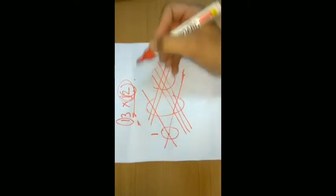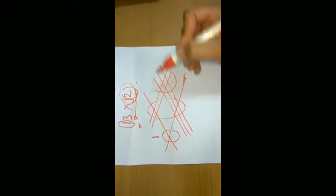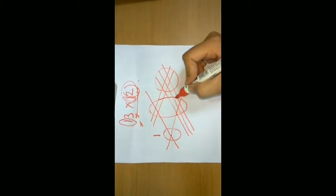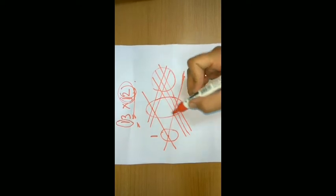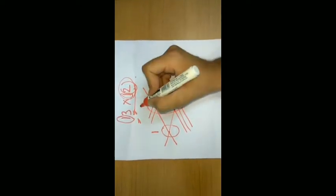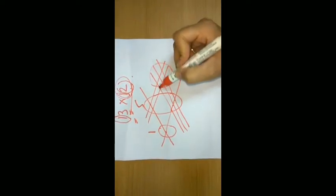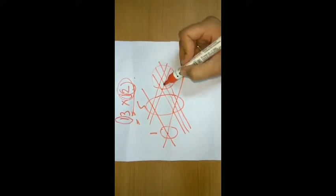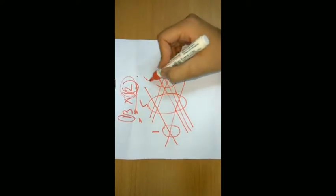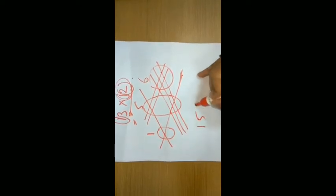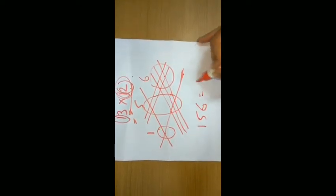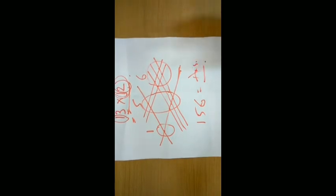That is 1, 2, 3, 4, 5 - that is 5. And here 1, 2, 3, 4, 5, 6 - that is 6. So 1, 5, 6 will be the answer to this question.